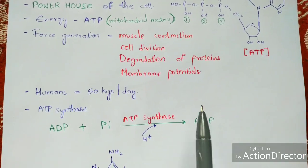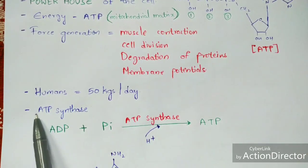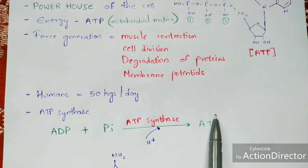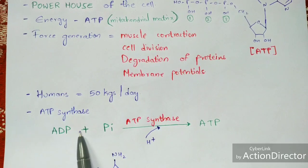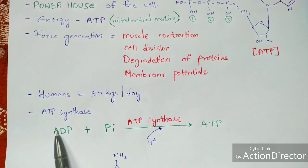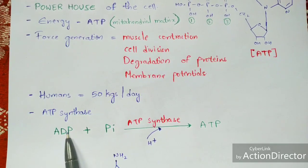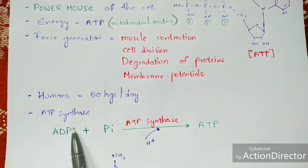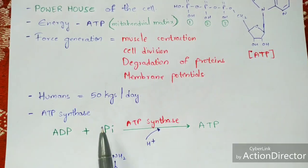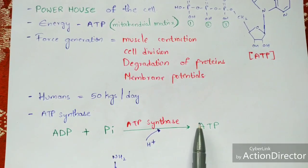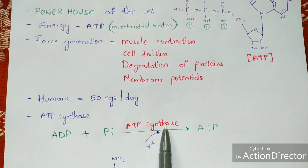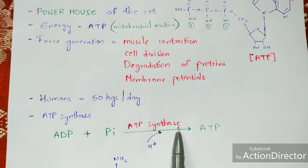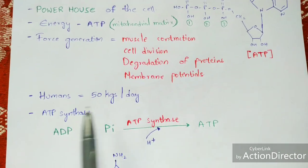ATP is generated by an enzyme known as ATP synthase. This enzyme mainly helps in the formation of ATP in such a way that ADP — adenosine diphosphate, which has two phosphate groups — gets combined with an inorganic phosphate group to form adenosine triphosphate. H⁺ ions, that is protons, are utilized through a proton gradient to help in the formation of ATP.